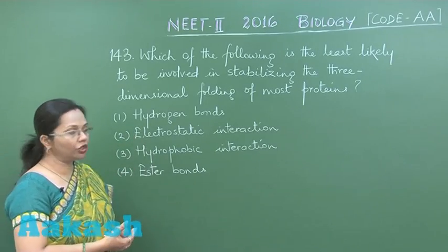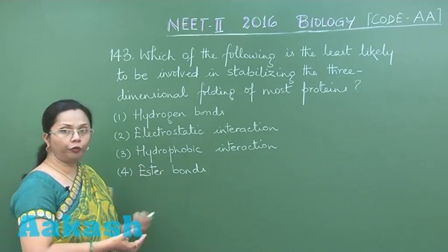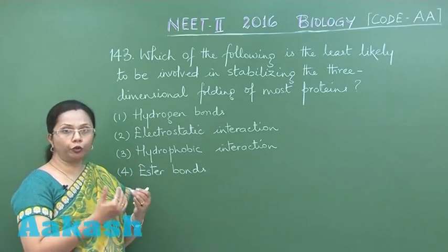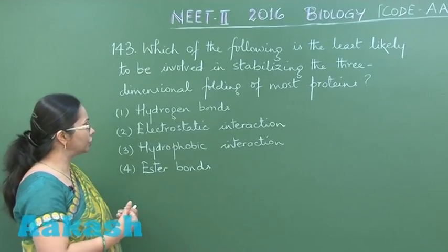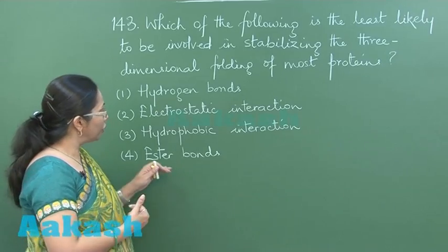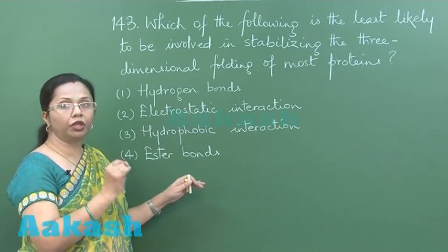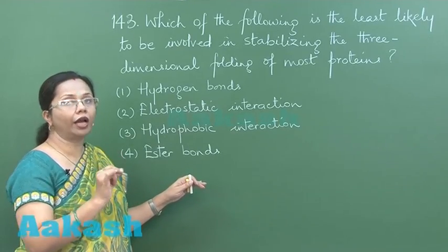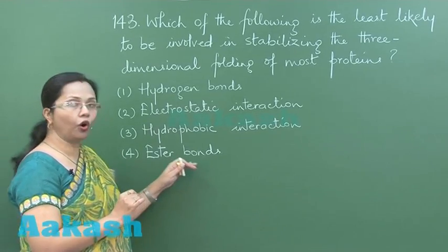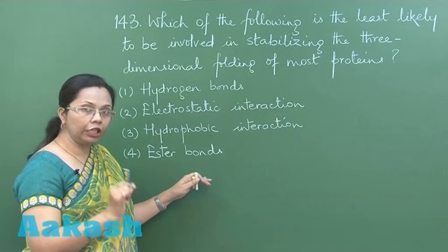Hydrogen bonds, electrostatic interactions, and hydrophobic interactions between the hydrophobic R groups of amino acids are present. But in this case there are no ester bonds, because ester bonds are formed when there is a reaction between a carboxyl group and a hydroxyl group.